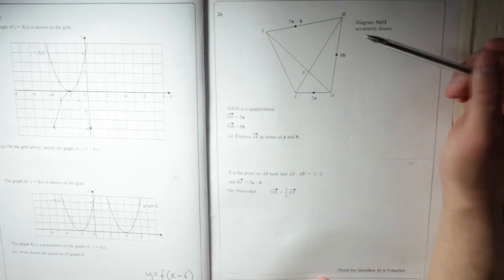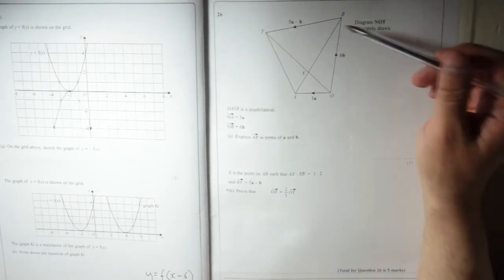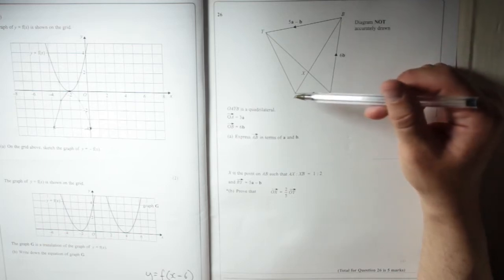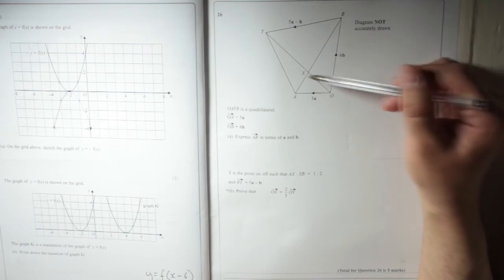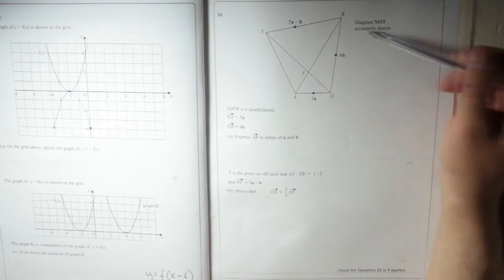OK, we've got a vectors question here. We have the quadrilateral O, A, Y, B. A few points marked on it. Diagram is not accurately drawn.